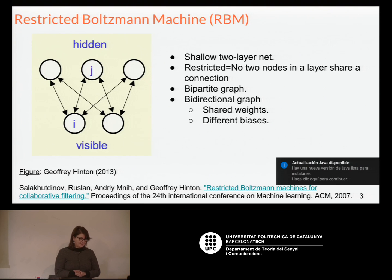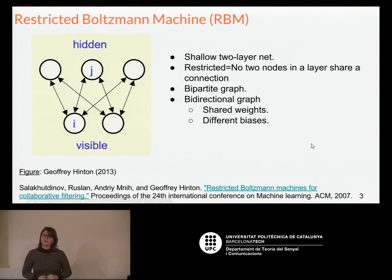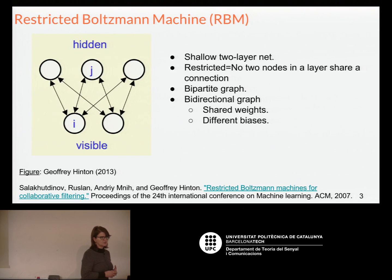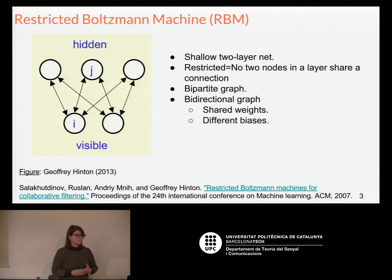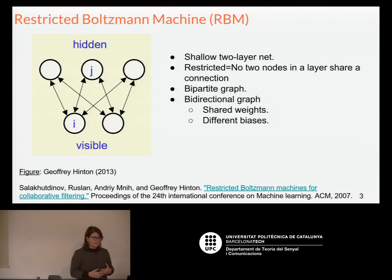An RBM is a basic architecture with two layers: the visible layer, where we have the input data, and the hidden layer. RBMs come from graphical theory with a Markov chain. It's called 'restricted' because nodes within one layer are not connected. It's bipartite because the probability of each hidden element is independent of the other elements in the same layer.